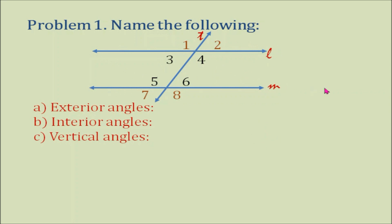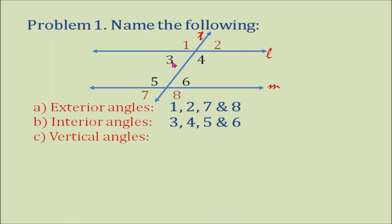Line L and line M are cut by transversal T, and the angles are named 1, 2, 3, 4, 5, 6, 7, and 8. The exterior angles are angle 1, angle 2, angle 7, and angle 8 — they are outside. The interior angles are angle 3, angle 4, angle 5, and angle 6.